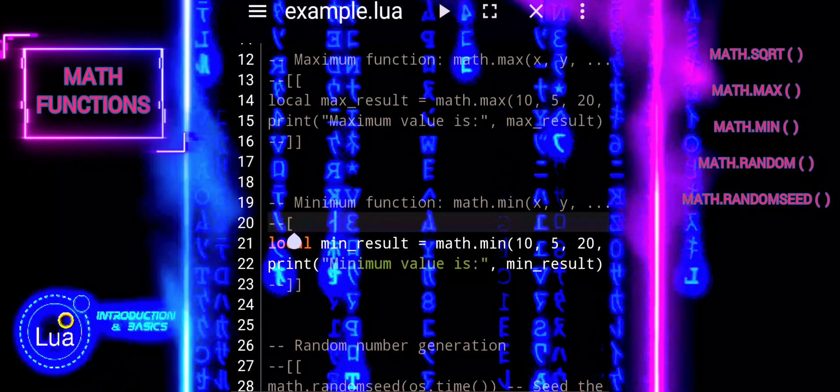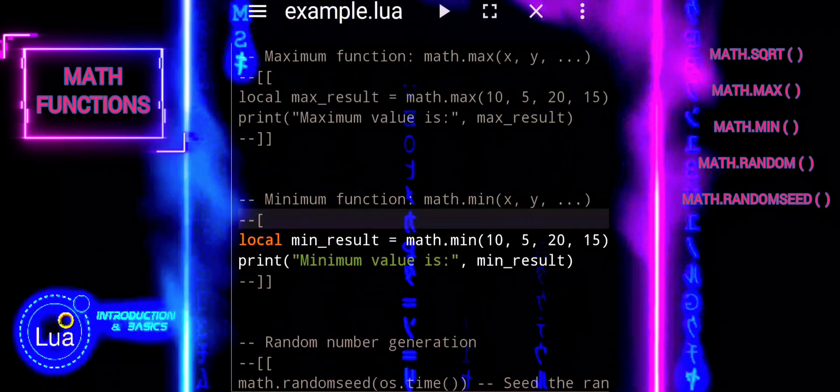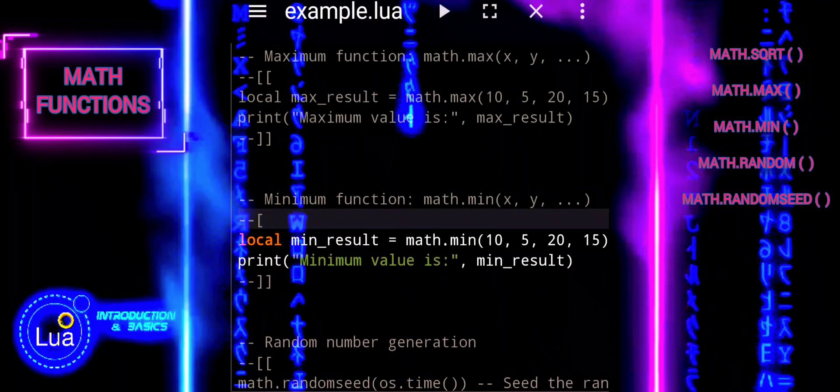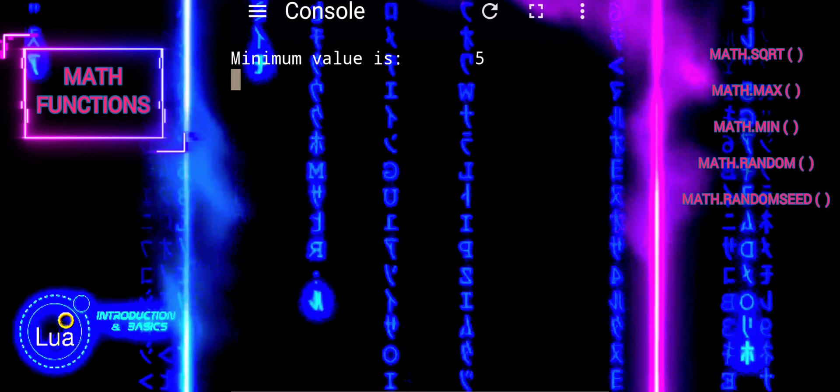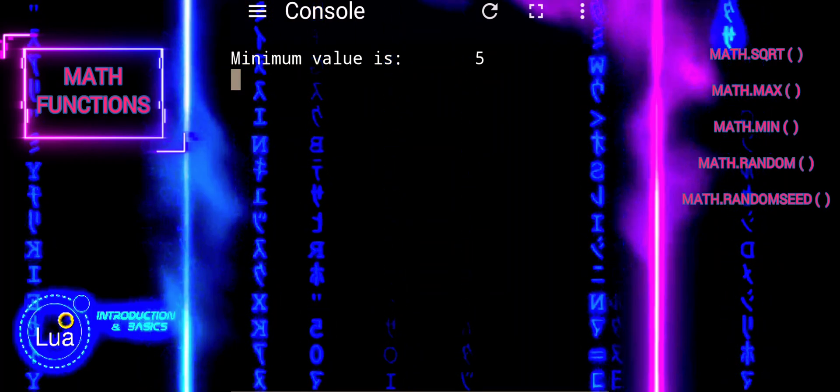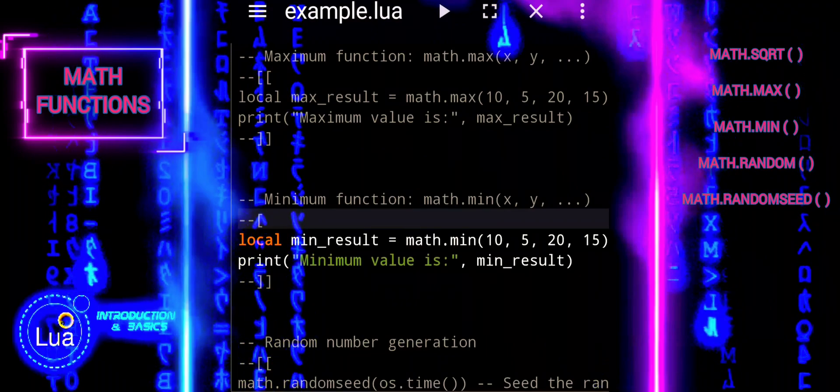The math.min function is the counterpart of math.max. It is used to determine the minimum value among a set of numbers. In this example, math.min compares the numbers 10, 5, 20, and 15, and determines that 5 is the minimum value.